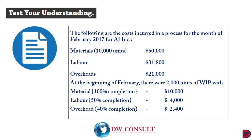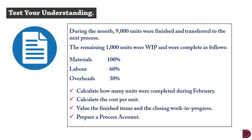The following are the costs incurred in the process for the month of February 2017 for AJ Incorporated: materials — 10,000 units at $50,000; labor — $31,800; overheads — $21,000. At the beginning of February, there were 2,000 units of work in progress with materials at 100% completion ($10,000) and labor at 50% completion ($4,000).